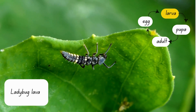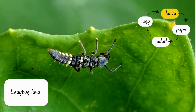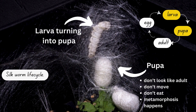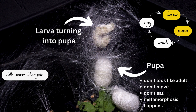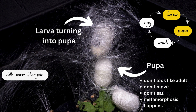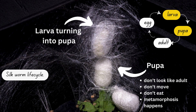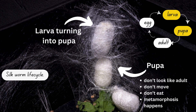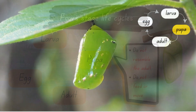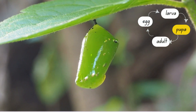Larva is the young of an insect which doesn't resemble the adult. Larva eats a lot and molts — molting is the shedding of old exoskeletons — allowing an insect to grow larger. Pupa do not resemble their adult; it's the time when metamorphosis happens and the adult structure develops. They do not feed or move. Insects don't eat during the egg and pupal stages.